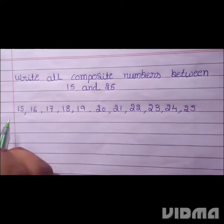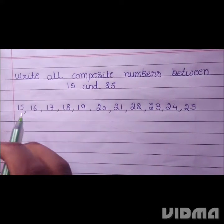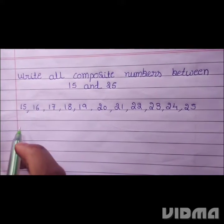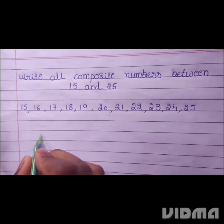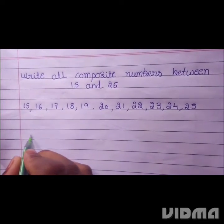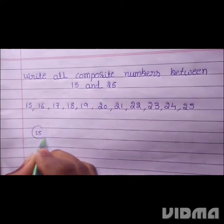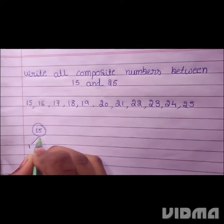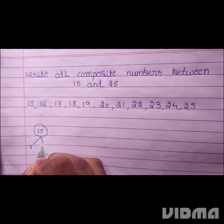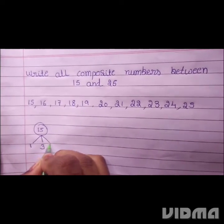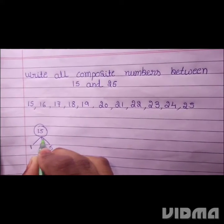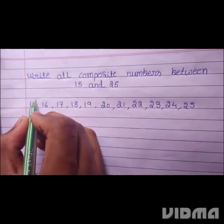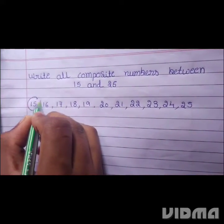15 is a composite number because 15 has more than two factors. For example, 15 comes in the one table, three table, five table, and itself 15 table. So 15 is a composite number.